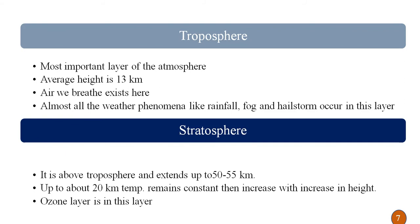The boundary between the troposphere and stratosphere is called the tropopause. The stratosphere is above the troposphere and extends up to a height of 50 to 55 kilometers. Up to about 20 kilometers the temperature remains constant, then increases with increasing height. The most important feature of this layer is the ozone layer, which is a protective layer present in the stratosphere at a height of approximately 23 kilometers from mean sea level.